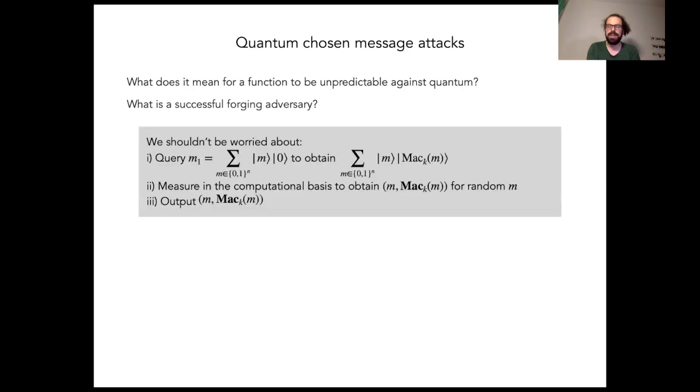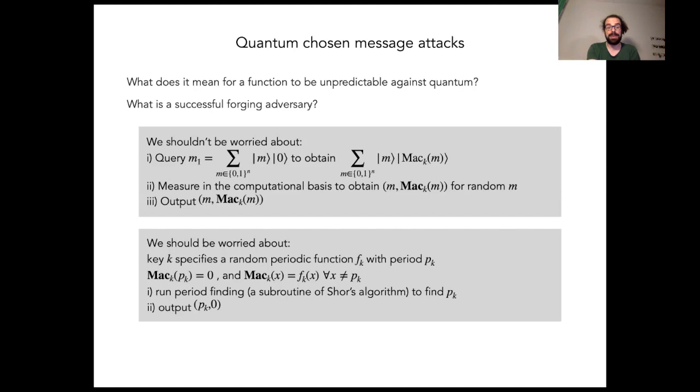We've just seen a non-example, so an example of an attack that we shouldn't count as successful. Here's one that we should be worried about. Let's specify a MAC by choosing a random periodic function with period pk, but then puncturing it at the input pk and set the output to zero there. Now there's the following adversary.